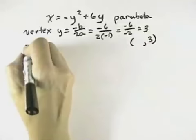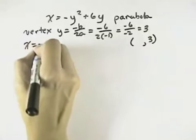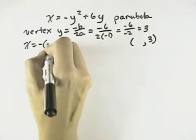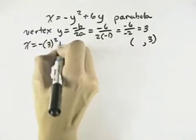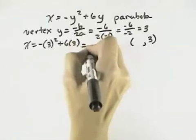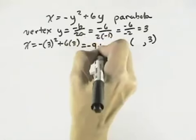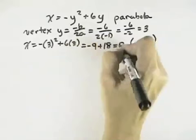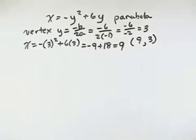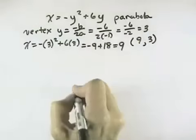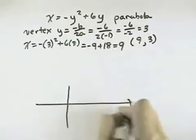Now we need to find the x value. To find the x value, we substitute in the y value of 3, so we have the negative of 3 squared plus 6 times 3. So the negative of 3 squared is 9 plus 18, that's going to give us 9. So we're going to have our vertex at x equals 9, y equals 3. So let's go ahead and sketch that in.